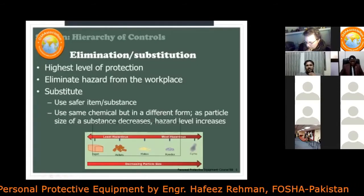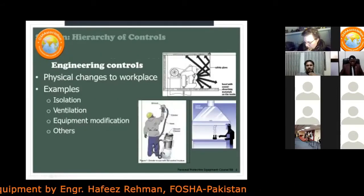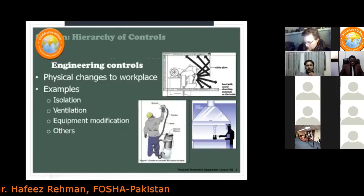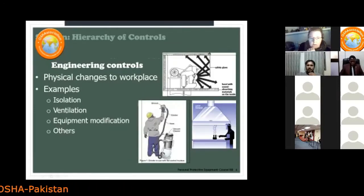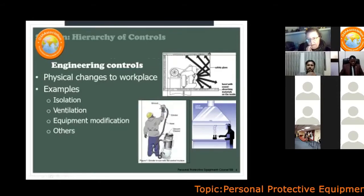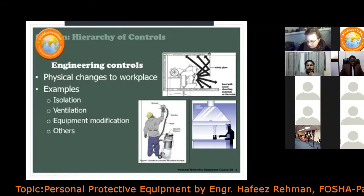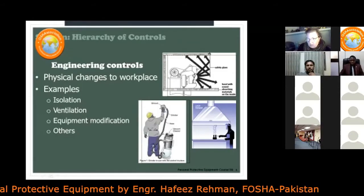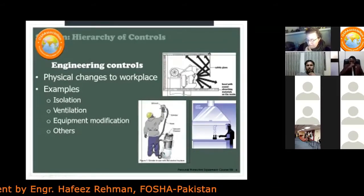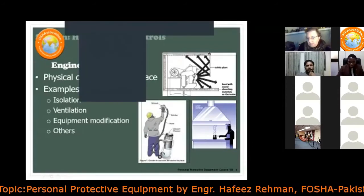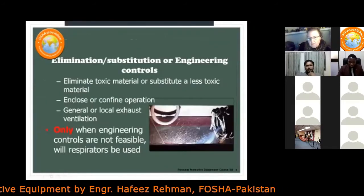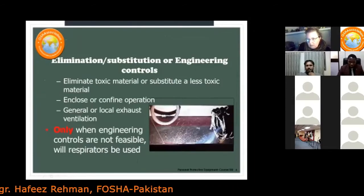Engineering controls involve making physical changes, such as using safety guards on machines, installing local exhaust ventilation to remove smoke, or modifying equipment. Typically, engineering controls involve isolating the process, providing ventilation, or modifying equipment to avoid hazards.